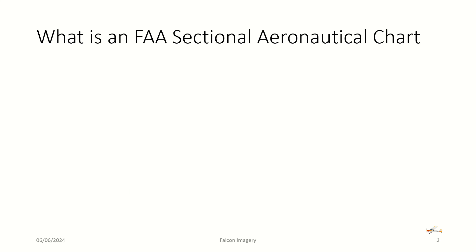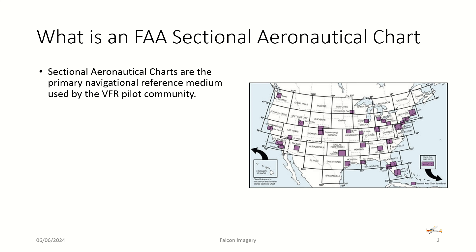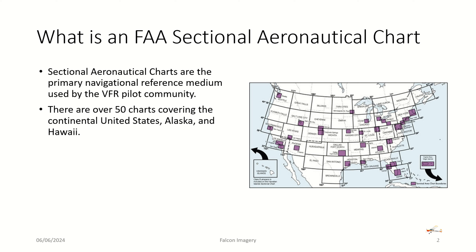So what is an FAA sectional aeronautical chart? The sectional aeronautical charts are the primary navigational reference medium used by the VFR pilot community. As you can see on the right-hand side in this picture, there are over 50 sectional charts that cover all of the continental United States, Alaska, and Hawaii. So you have to figure out where you're living and pick the right sectional associated with the area where you plan to be flying.